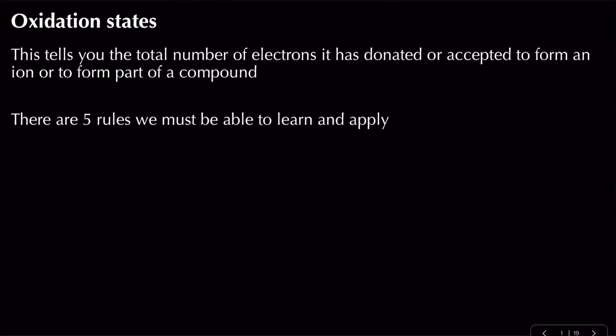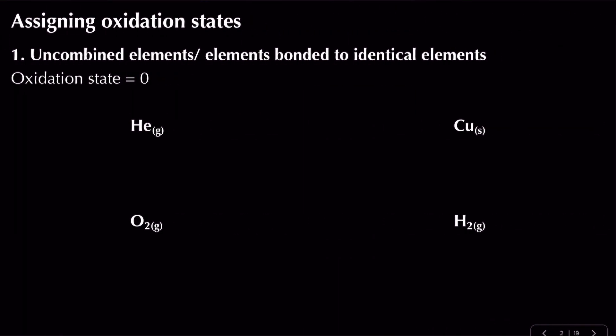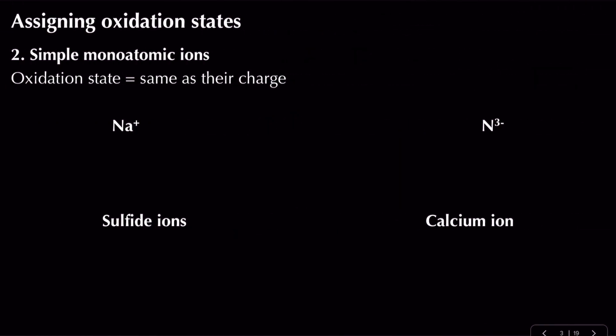There are five rules to remember for assigning oxidation states, though these can branch out into more. The first rule: if we have an uncombined element, or an element bonded to an identical element, the oxidation state is zero. So helium is zero, copper in a giant metallic lattice is zero, O₂ is zero, and H₂ is zero.